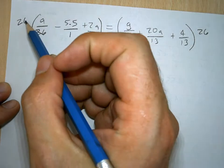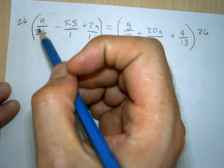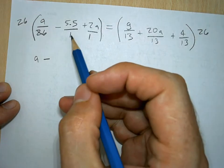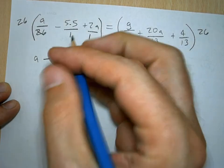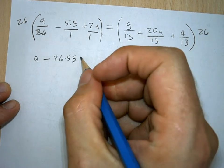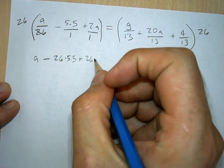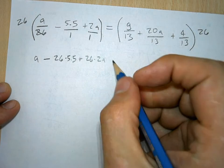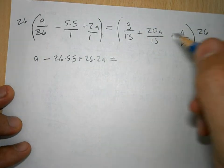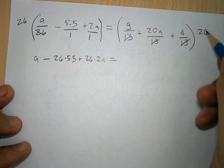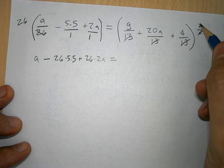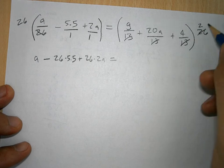The 26 then cancels here, so that turns this just into A. Since there's no 26 at the bottom, this just carries over with 26 times 5.5 plus 26 times 2A. Over here on this side, the 13s go into 26 two times each. So, actually what we're going to do is we're going to multiply 2 and use the distributive property into each of these three terms.